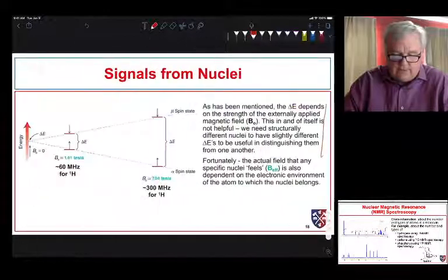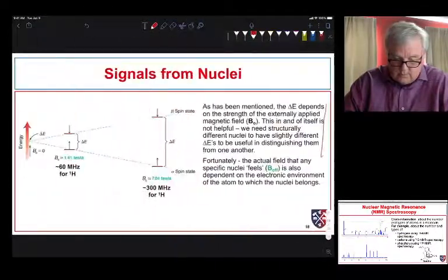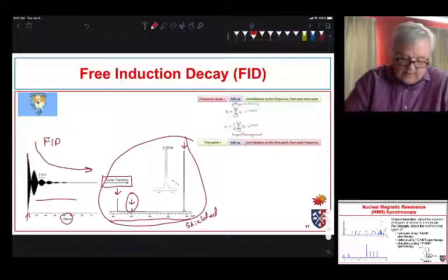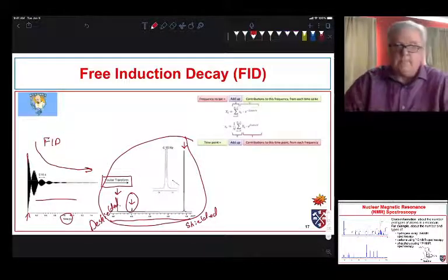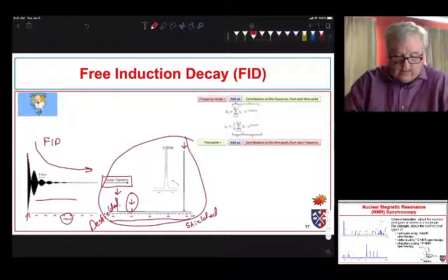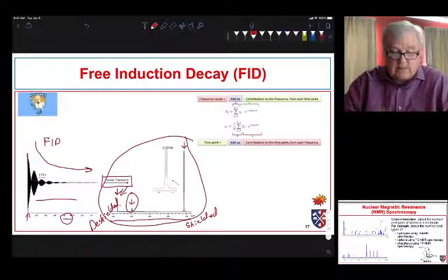All of that information comes out of the spectrum — this is the region where our atoms are highly shielded, and these are deshielded. They give us different signals, and because of that we can tell that these have more electronegative groups attached to them — there's less electron density around those nuclei. In the next video we'll take a look at what this looks like when we examine some spectra.